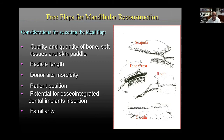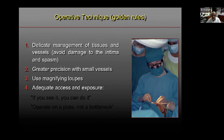My mentor Fuchun Wei, pictured 25 years ago, taught me along with many other master microsurgeons that delicate management of tissues and vessels is truly crucial. For greater precision with small vessels, use magnifying loupes—not only for dissecting flaps but also for anastomosis if you don't have a microscope. Remember that just because you're doing microsurgery doesn't mean you should use micro incisions—always have adequate access and exposure. If you can see it, you can do it; operate on a wide field, not in a bottleneck.